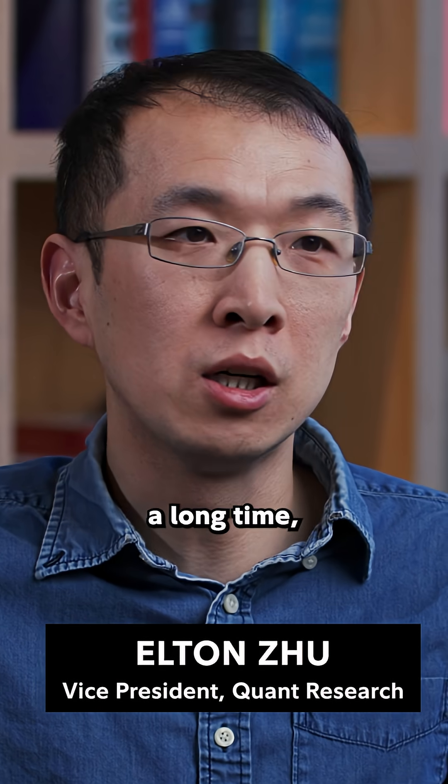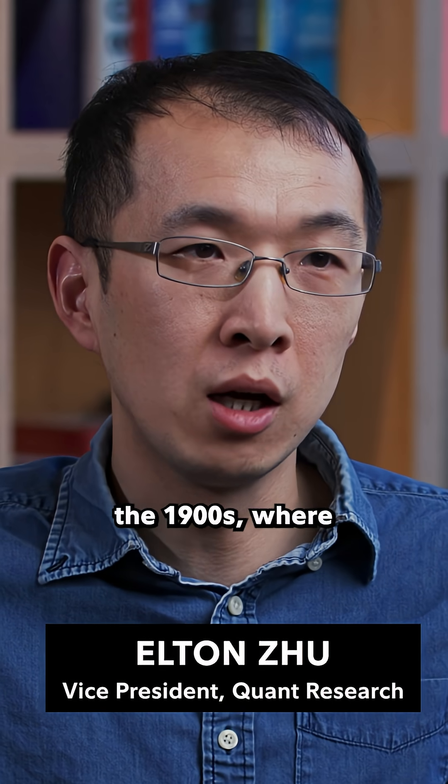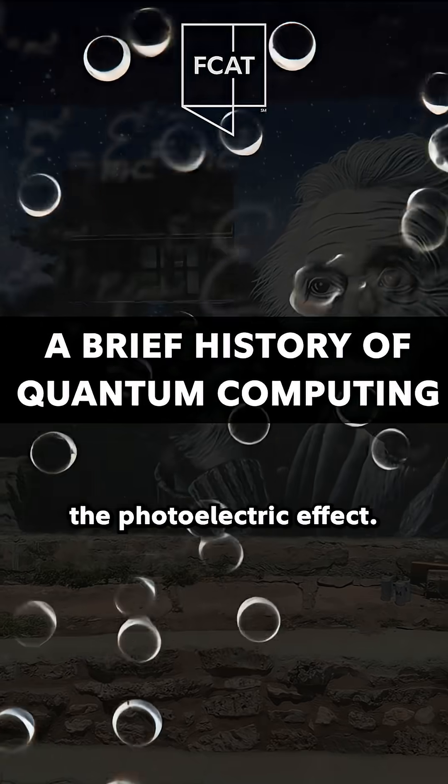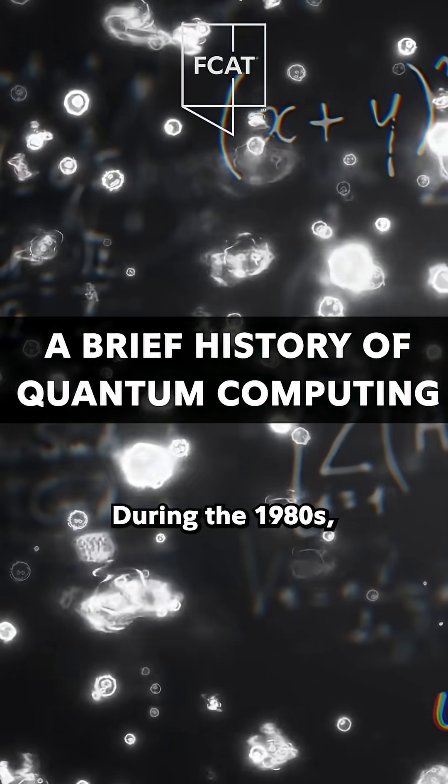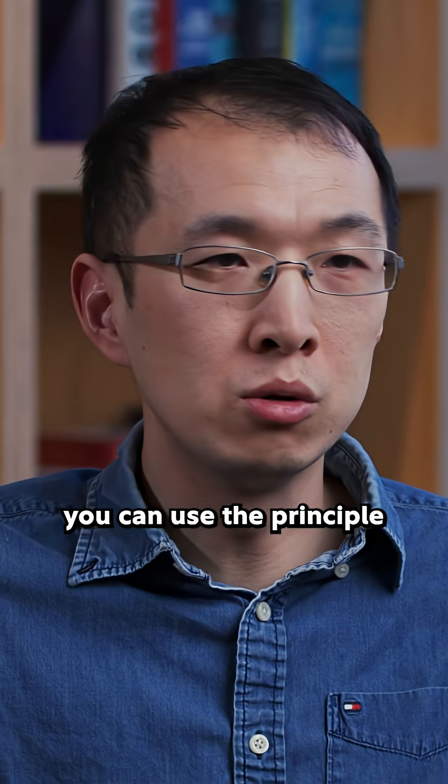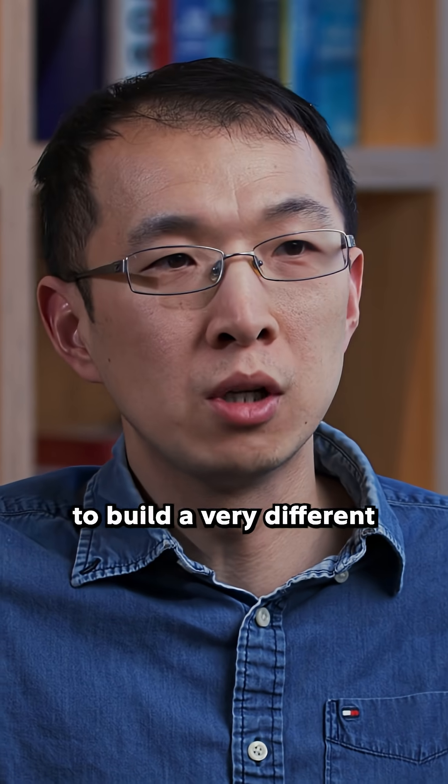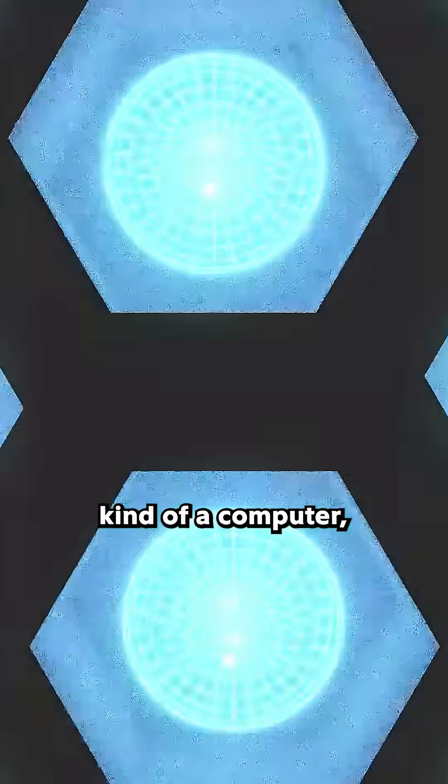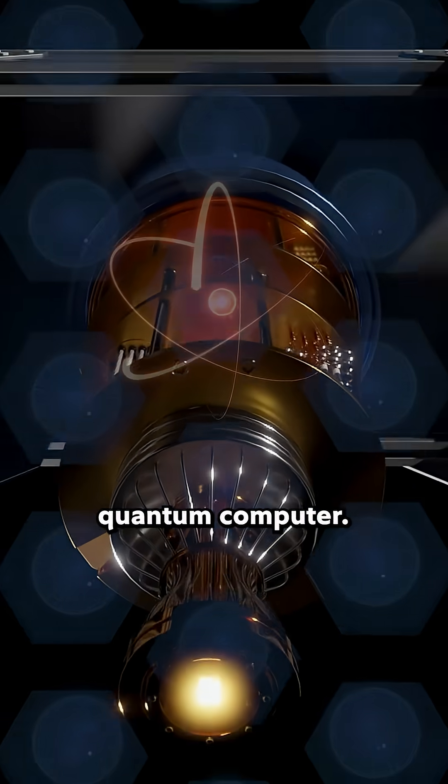Quantum mechanics has existed a long time, since probably the 1900s when Einstein discovered the photoelectric effect. During the 1980s, Feynman realized that you can use the principles of quantum mechanics to build a very different kind of computer called the quantum computer.